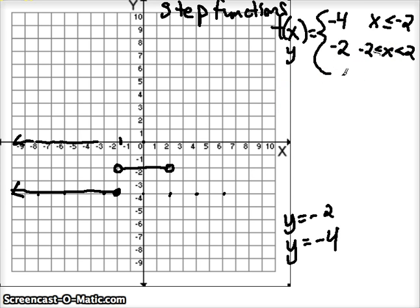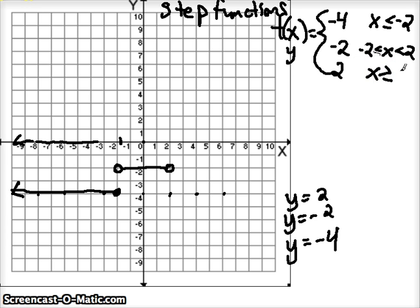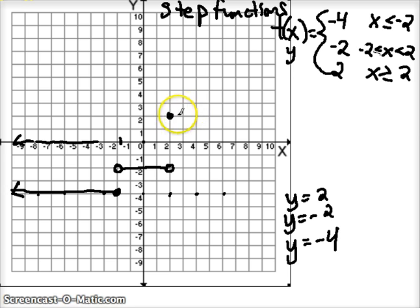Let's do one more. y = 2 if x is greater than or equal to positive 2. Starting at positive 2 on the x-axis, we have a horizontal line at y = 2. Since it includes x = 2, we have a closed circle there, and the rest of the line exists as long as x is greater than 2, going to the right. So we've got ourselves a little stair — we walk up here, walk up there. Stairs — that's a step function.